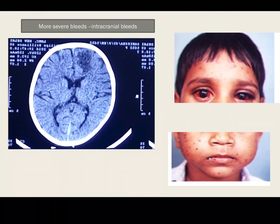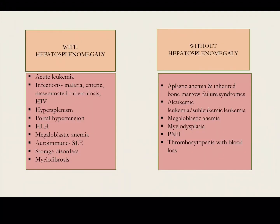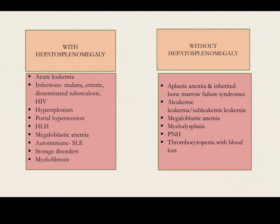The bleed due to thrombocytopenia can be severe, including intracranial bleeds or conjunctival bleeds as shown in the picture. Differentials of pancytopenia with hepatosplenomegaly include acute leukemia, infections, and hypersplenism, whereas without hepatosplenomegaly we see aplastic anemia, inherited bone marrow failure syndromes, or megaloblastic anemia.